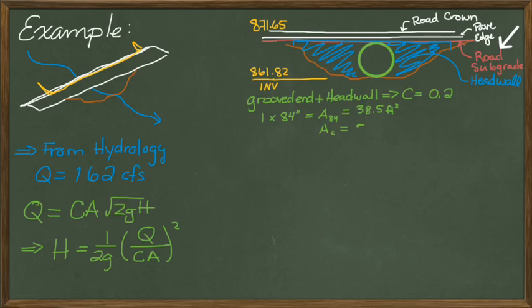And this is an 84 inch diameter pipe. So one of those pipes is 38.5 square feet. And there's only one pipe. So that means the total culvert area is 38.5 square feet.